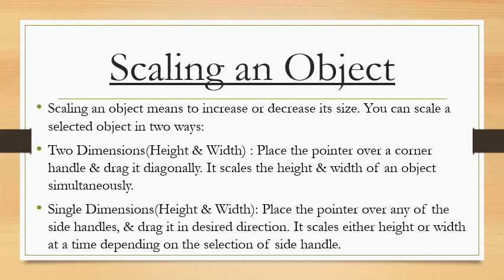Now, scaling an object. Scaling means hota hai kisi object ki size ko increase ya decrease karna. Hum Flash program mein kisi object ko two ways se scale kar sakte hain. First one: kisi object ke corners par mouse pointer le jakar click karte hue usko drag karna hoga — isse us object ki height aur width similar way se scale hoti hai, chahe increase kar rahe ho ya decrease, height aur width same way se change hogi. Second one: object ke kisi bhi side handle par jakar click karke drag karna hoga — isse sirf wahi height ya width resize hogi jisko hum drag kar rahe hain.